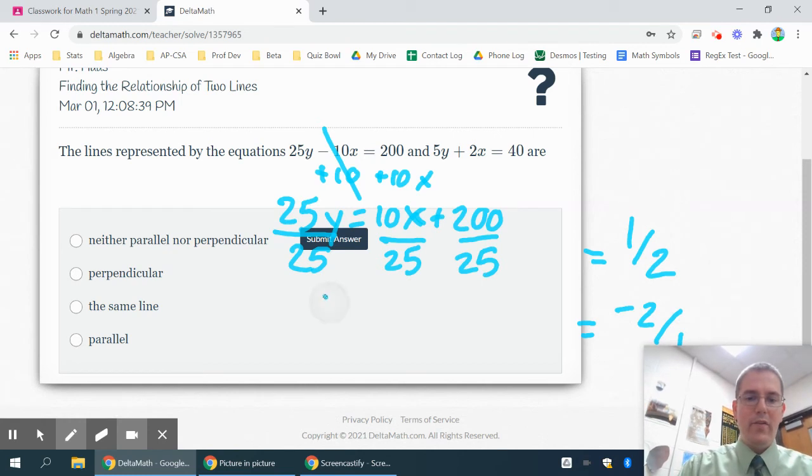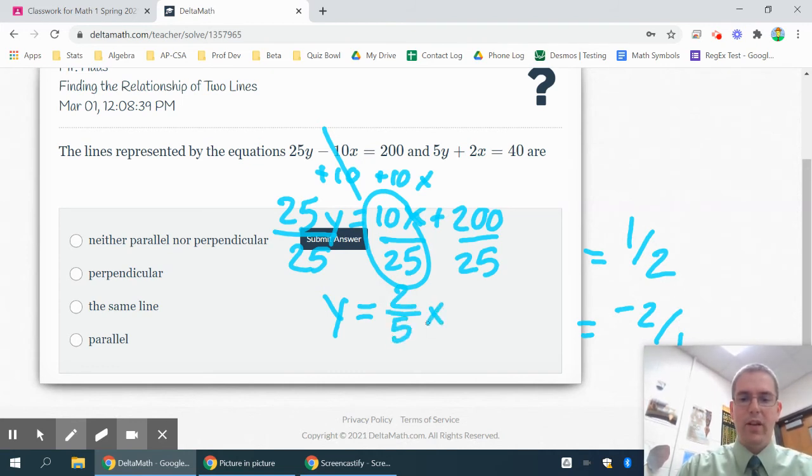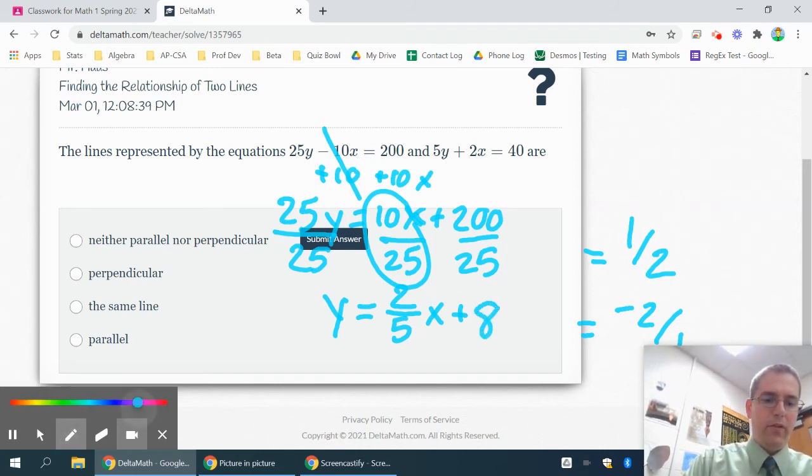And technically you have a plus 8 on the end, but that doesn't really matter. What matters is 10 over 25 reduces to 2/5 because you can divide 5 into 10 and 5 into 25. And we'll go ahead and change colors to do my other equation.